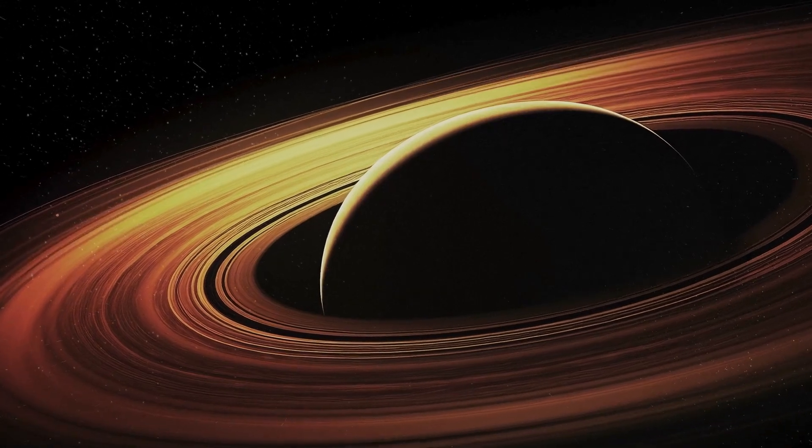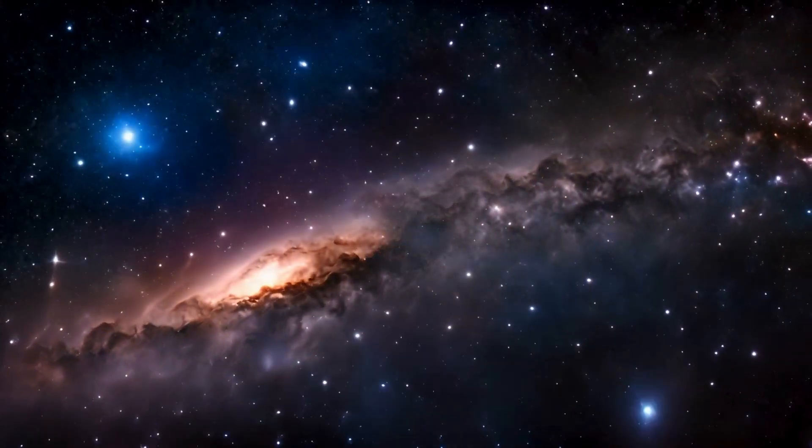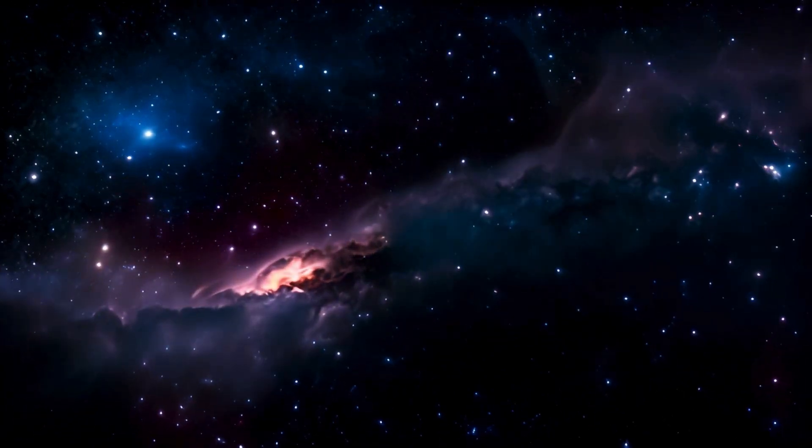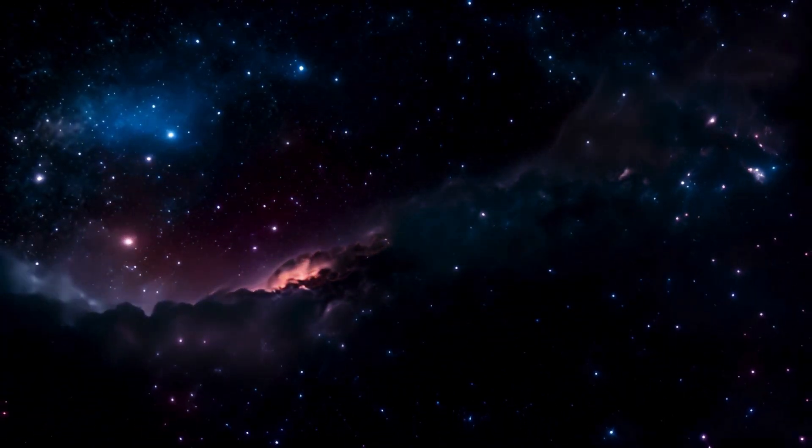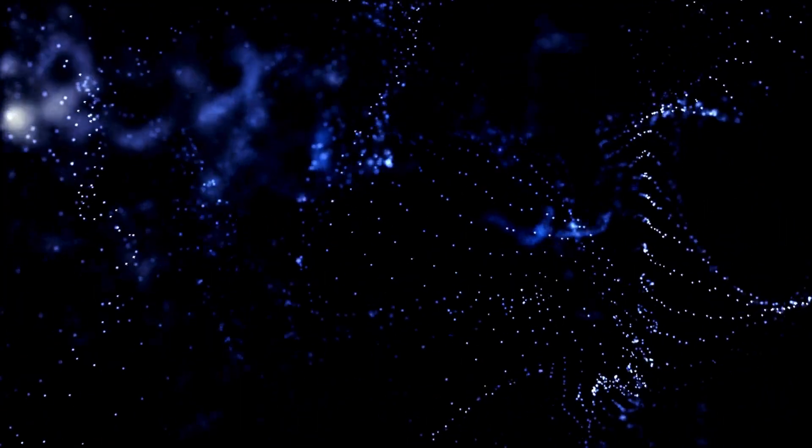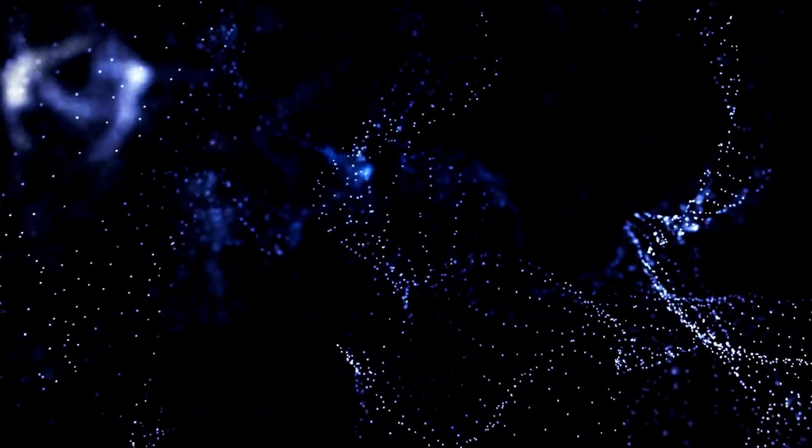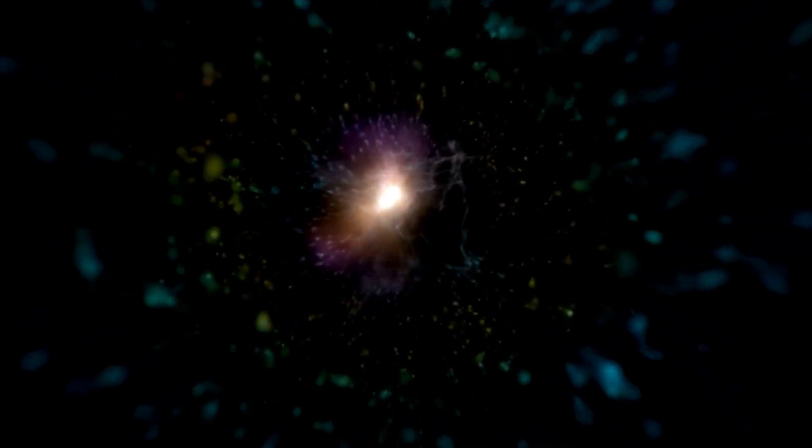As powerful as these collapses are, something strange happens near their surfaces: time itself begins to distort. From the perspective of an observer far away, time seems to slow down as one approaches the event horizon, the point of no return for anything falling into a black hole. It's as if time itself behaves differently near a black hole compared to our own.